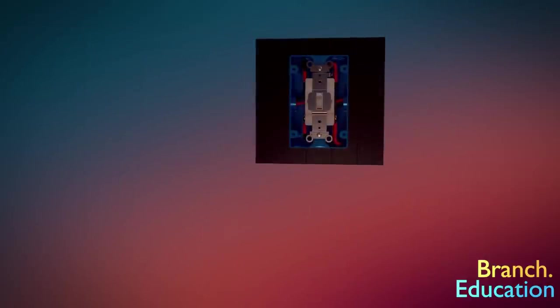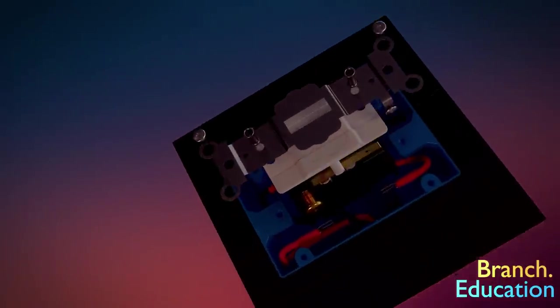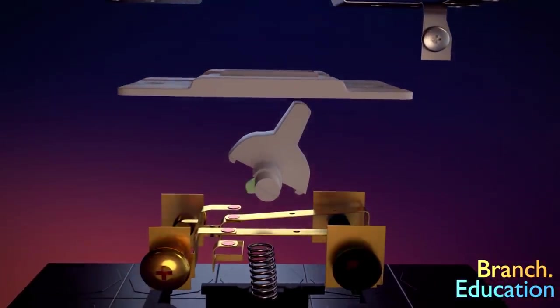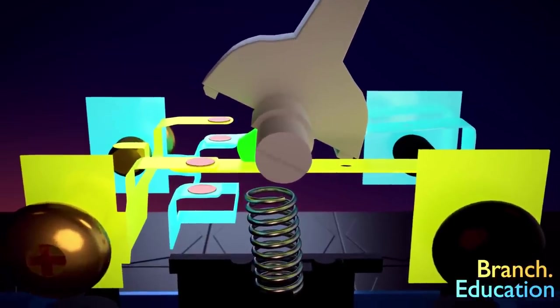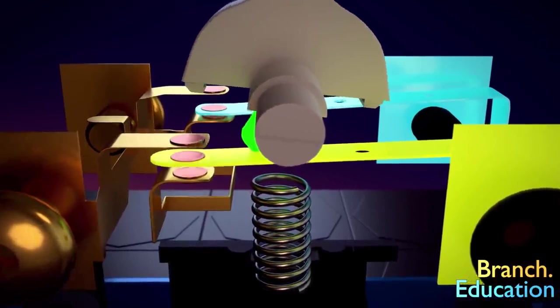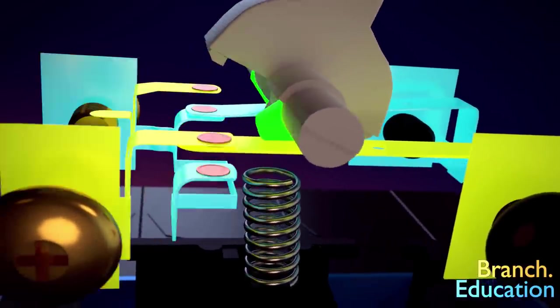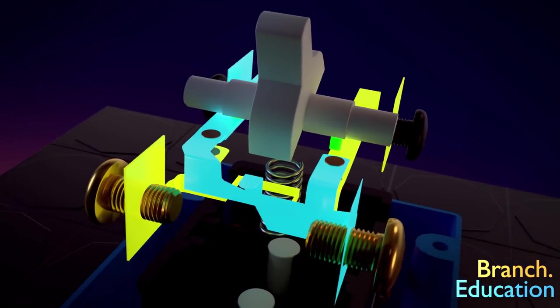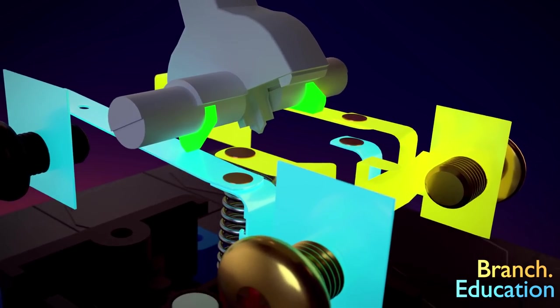When we open up the four-way switch, we find an even more complicated layout and yet a familiar set of components. The bottom plastic leg of the toggle switch presses down on the one contact bar when toggled up and presses down on the other contact bar when toggled down. As you can see, the path of the electricity is flipped from each pair of traveler terminals to the other pair when toggling the switch from the up position to the down position.